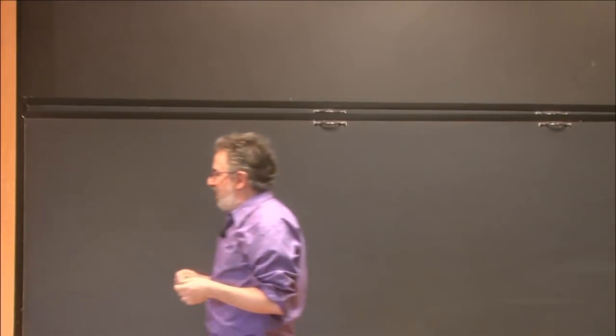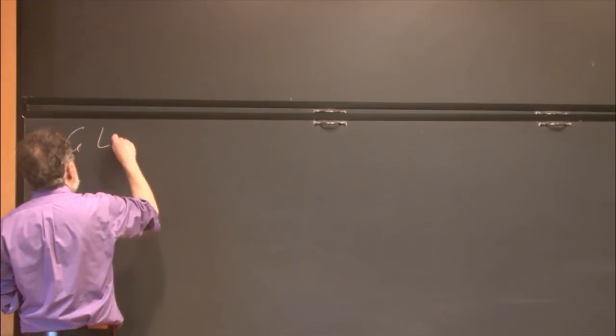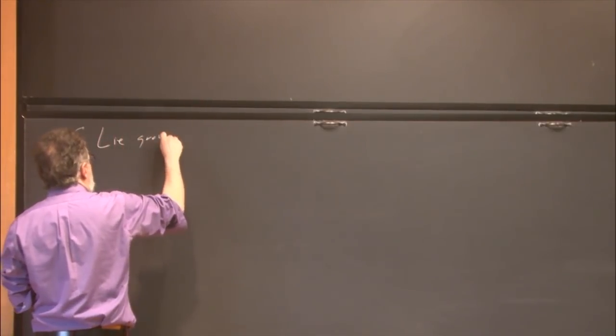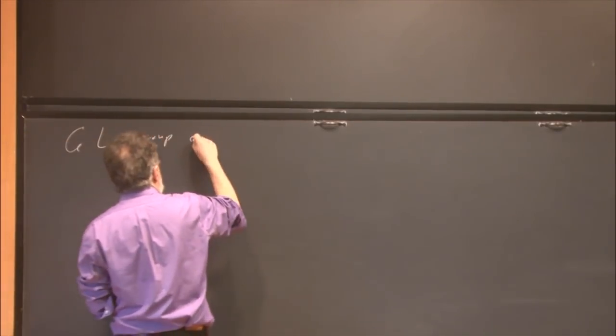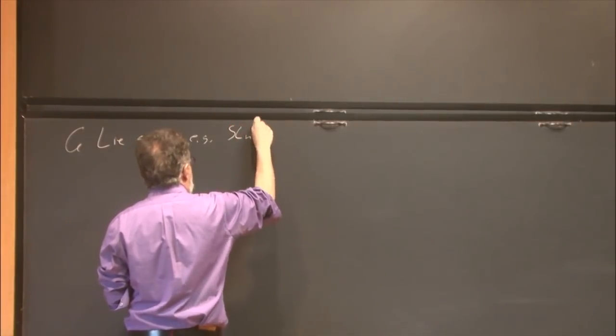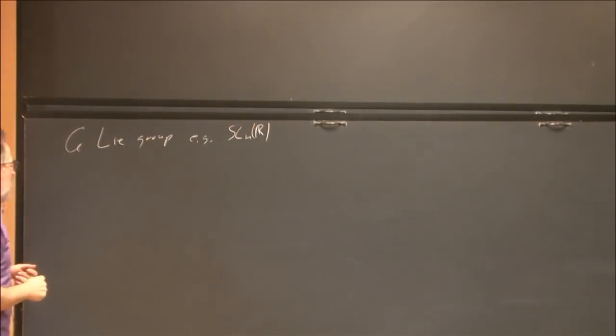After providing context, I hope at the end to tell you some ideas towards the proof. What are we really thinking about here? We're really thinking about G being a Lie group. My example for today will be SL(N,R), but I'll say a few things more about it later.